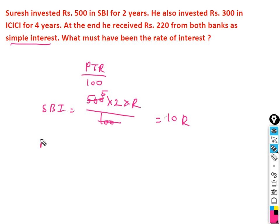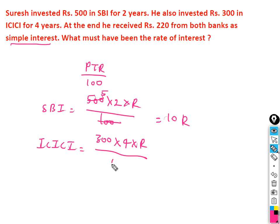Next, ICICI bank: principal is 300, time is 4 years, rate of interest is R, divided by 100. So the simple interest for ICICI is 12R.